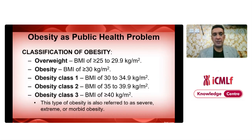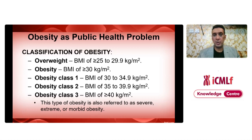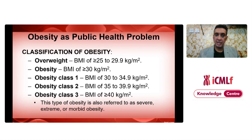The WHO defines obesity with a specific classification. If your body mass index is 25 to 29.9 kg per meter square, you are overweight. If your body mass index is more than or equal to 30 kg per meter square, you are obese.